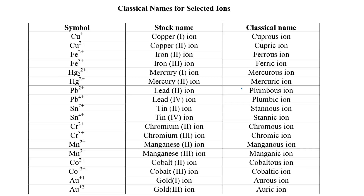Here's a list of classical names. For copper: if copper has a charge of plus 1, it's named cuprous; if it has a charge of plus 2, it's named cupric. For iron: iron with a charge of plus 2 is named ferrous, and iron with a charge of plus 3 is named ferric.